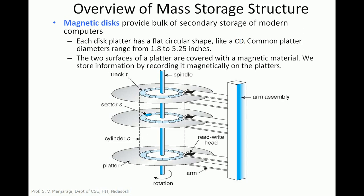Now let us begin with an overview of mass storage devices. We all know that in the computer system, data is permanently stored in secondary storage devices. In this topic, we will learn about the physical structure of different secondary storage devices. Let us begin with the magnetic disk. Modern computer systems make use of magnetic disks as secondary storage devices. The magnetic disk basically consists of a number of disks called platters. These platters are circular in shape, they look like a CD, and the diameter of these platters ranges from 1.8 to 5.25 inches.